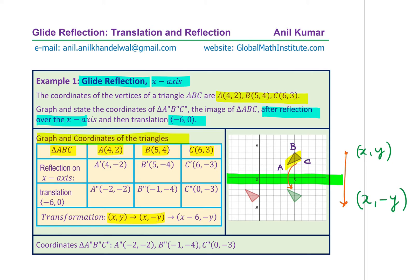We begin with triangle ABC where the coordinates are A(4,2), B(5,4), and C(6,3) as shown in the graph. When you reflect, you keep the x value the same and the y value will be the negative of the original value. So the y values become negative — that is reflection on the x-axis. The second operation is translation: we need to translate 6 units left, so the x values will be subtracted by 6.